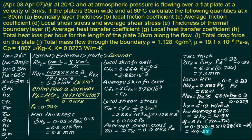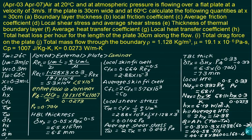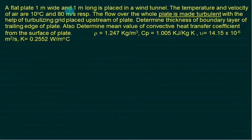The heat transfer rate is 44.5 W (J/s). Converting to kilojoules per hour: multiply by 3600 and divide by 1000, giving approximately 164.4 kJ/hr.